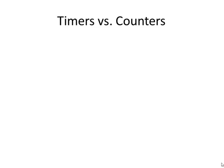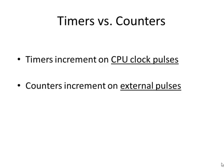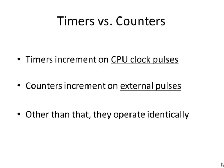Timers versus counters — like I said before, they operate almost identically. The only significant difference is that timers increment on CPU clock pulses. The CPU clock is what keeps all the data flow inside the CPU synchronized — it's kind of like the metronome for a musician or the drummer in a band; it keeps everything in sync. Counters will increment on external pulses, meaning you put an external signal in. For example, if I wanted to count parts coming down an assembly line, I might have a sensor that pulses every time a part goes by, and that would feed the clock pulses for the counter. But other than that, a timer and a counter operate exactly the same.